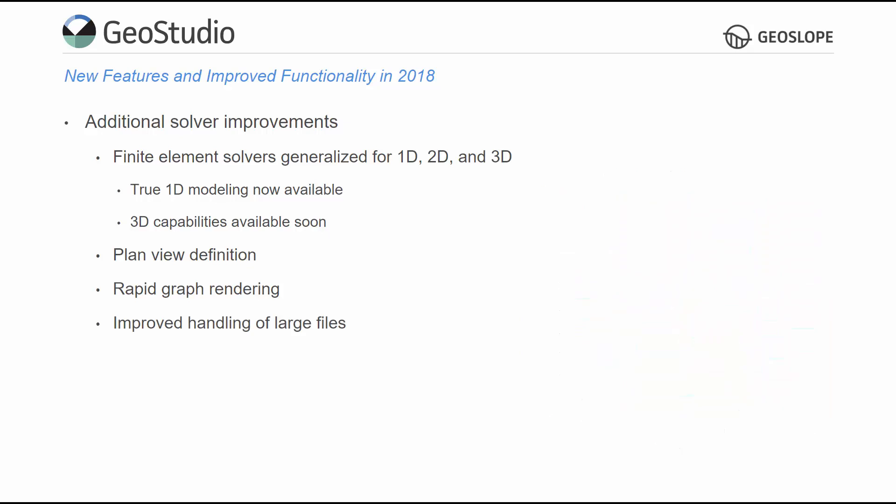The GeoStudio 2018 solvers have improved multithreading and new 64-bit processing support, improving solve time and handling for projects with greater discretization, large numbers of analyses, and add-in functions.